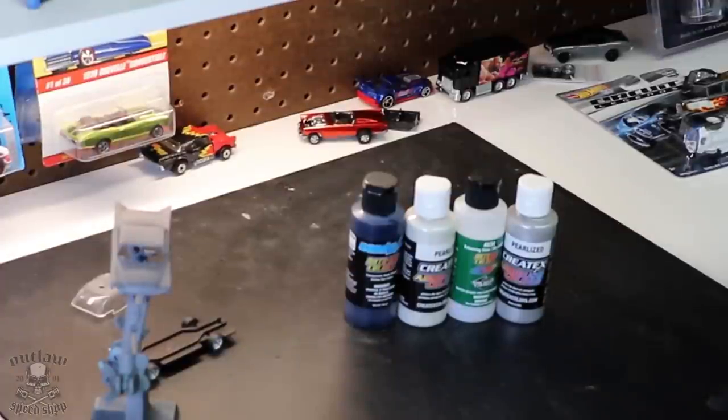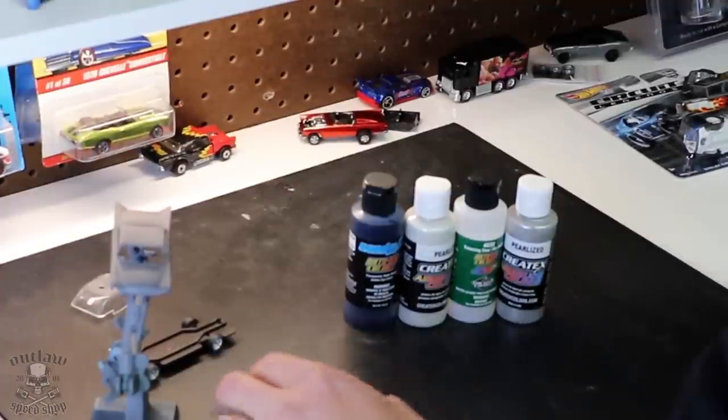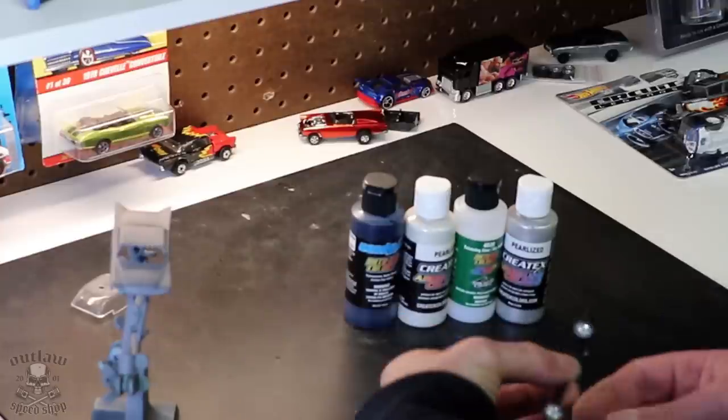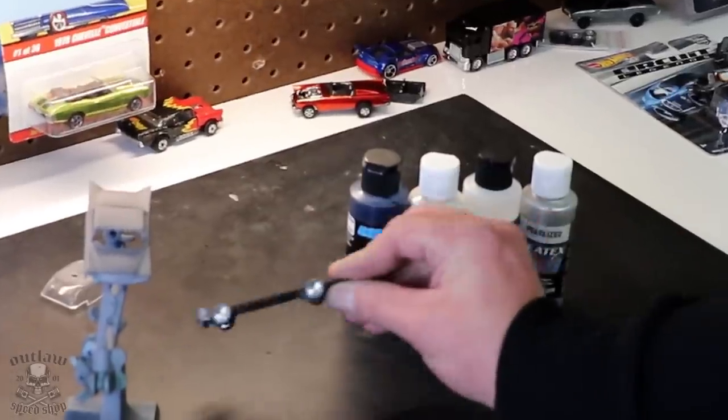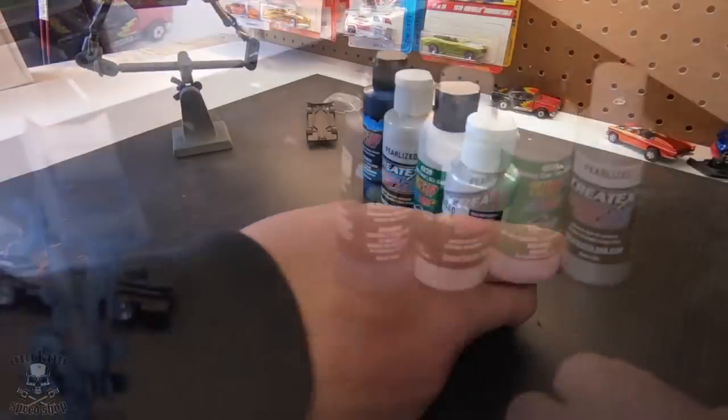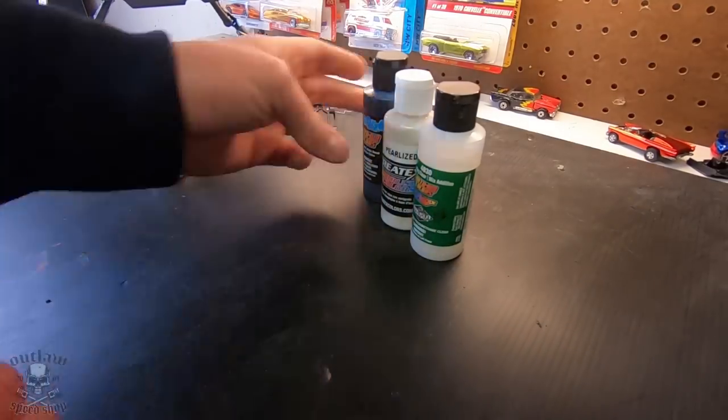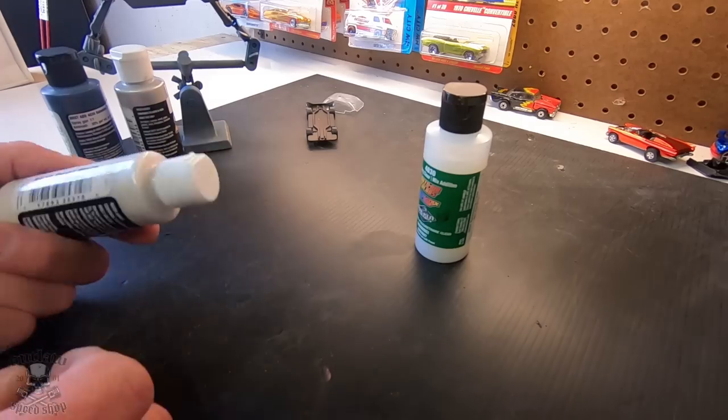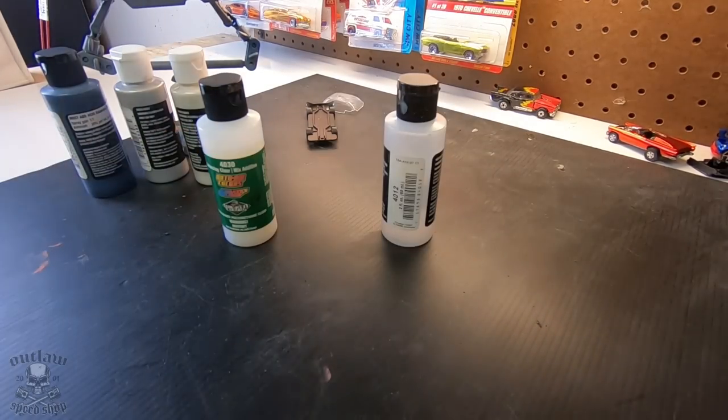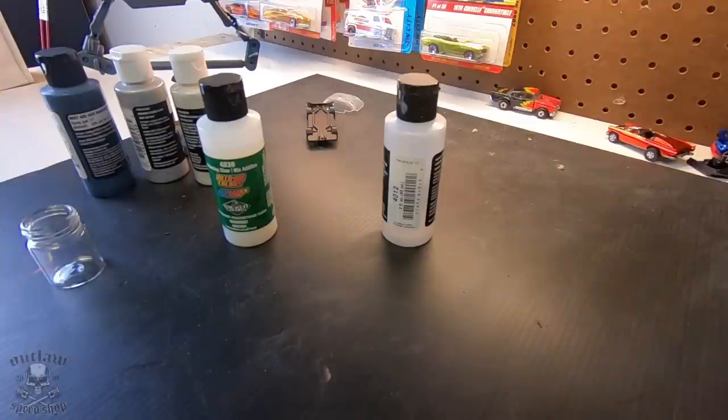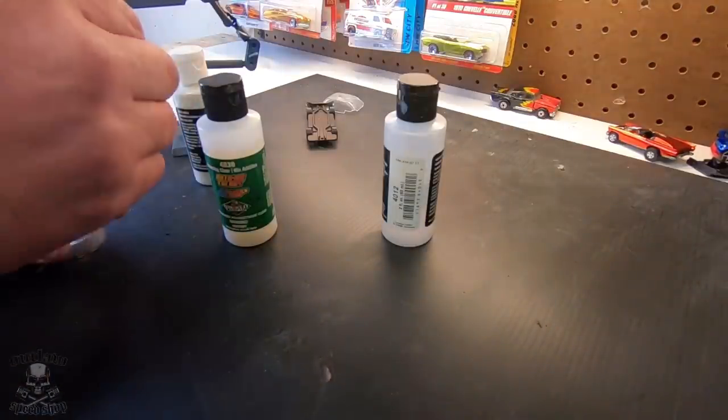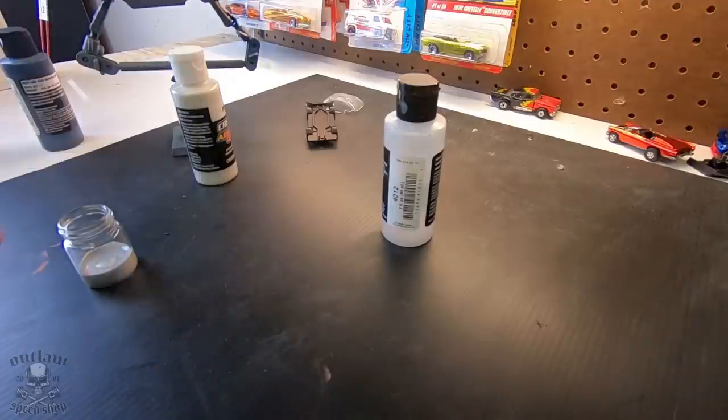So here is kind of where I wanted to go. I'm working with, I want to go two-tone silver roof and a blue candy body. So I'm starting with a pearl silver base. And this is pretty decent. You can mix it with some 4030 from Createx as well.